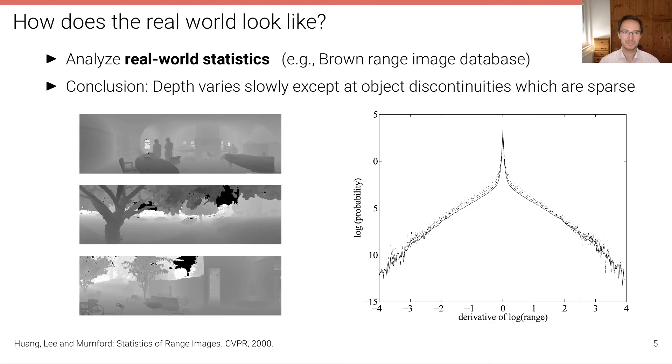And in order to overcome these ambiguities, we'd like to incorporate some prior knowledge about the real-world statistics, and we have seen that such statistics can be derived, for example, from datasets such as the Brown range image dataset that provides a large number of depth maps from which we can compute statistics. And we have concluded that depth varies slowly except at object discontinuities, which, however, are sparse.